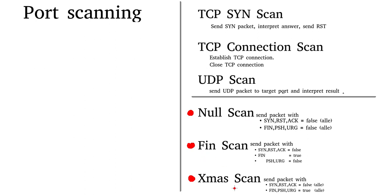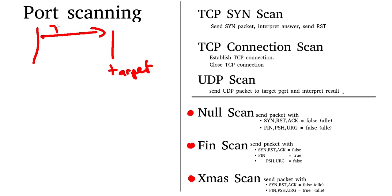The last three are the null scan, the FIN scan, and the Christmas scan. You send a TCP packet with specific flags. For the null scan, SYN, RESET, and ACK are false, and FIN, PUSH, and URGENT are also false. For the FIN scan, everything is false except the FIN flag. For the Christmas scan, SYN, RESET, and ACK are all false while FIN, PUSH, and URGENT are all true — people say it looks like a Christmas tree because all those flags are lit up.